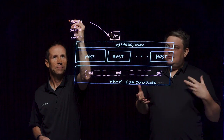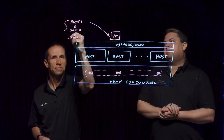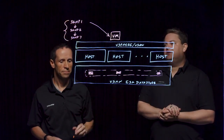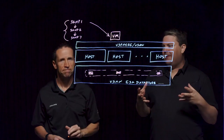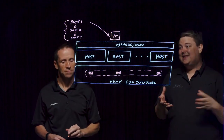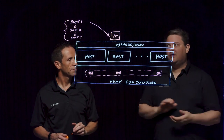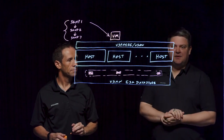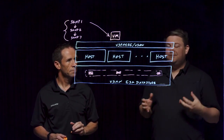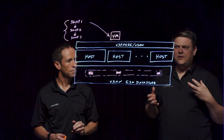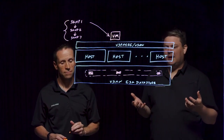Now, for vSAN, there have been improvements made to snapshots in the past, but fundamentally they still use a redo log type structure. And this means that whenever you need to delete that snapshot, there was data that had to flow around and move, and this could take significant amounts of time. This is something that for some workloads could just be excessively problematic.